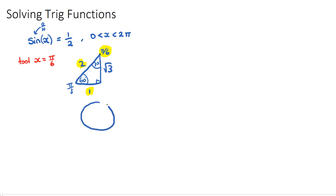If we draw our unit circle with our quadrants, all stations to central, ASTC, we need to think about, okay, sine gave us a positive ratio of 1 on 2. What are the positive sine quadrants?